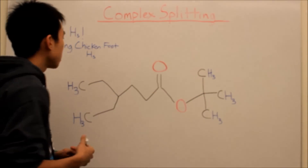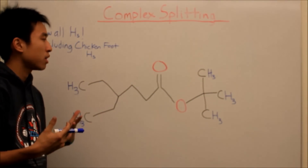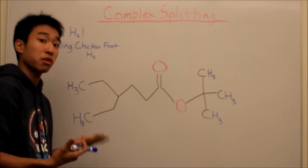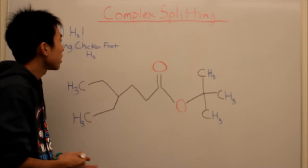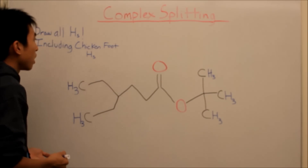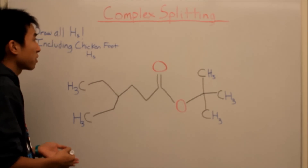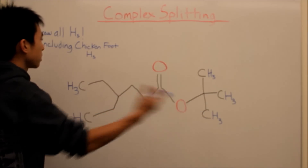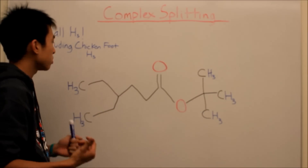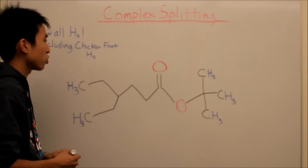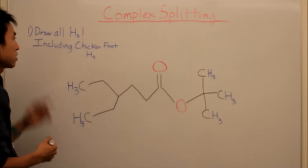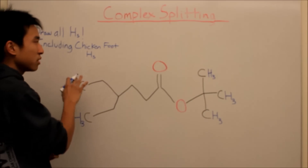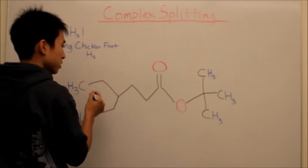This is going to be a little bit more complicated than simple splitting, which is the n plus 1 rule that I went over in my last video. So when you have complex splitting in a molecule like this, the first thing you want to do is draw hydrogens, including the chicken foot hydrogen. If you don't know what that is, just hold on a second.